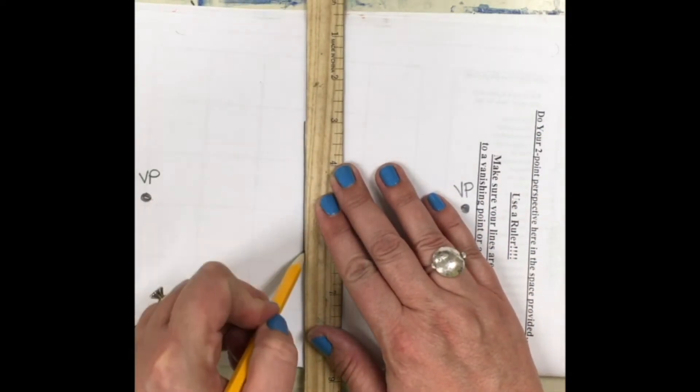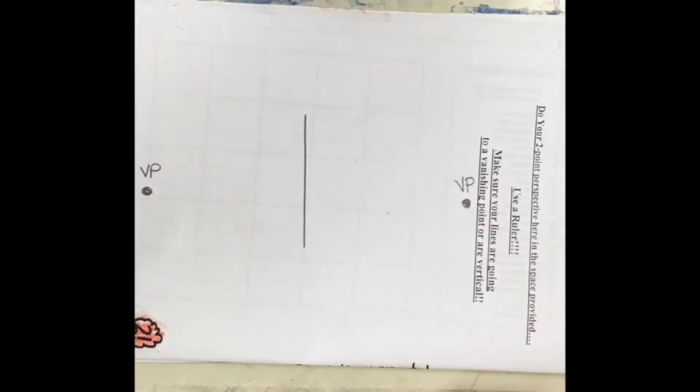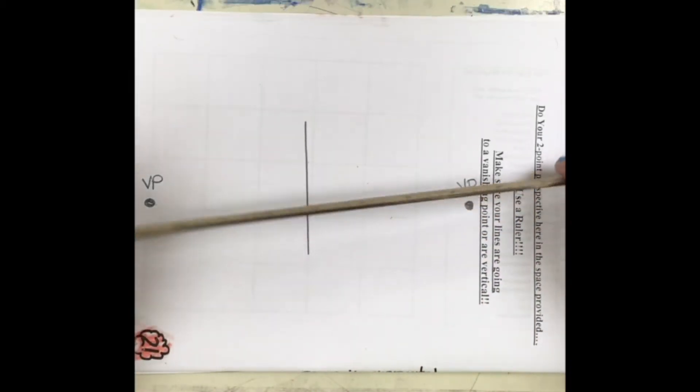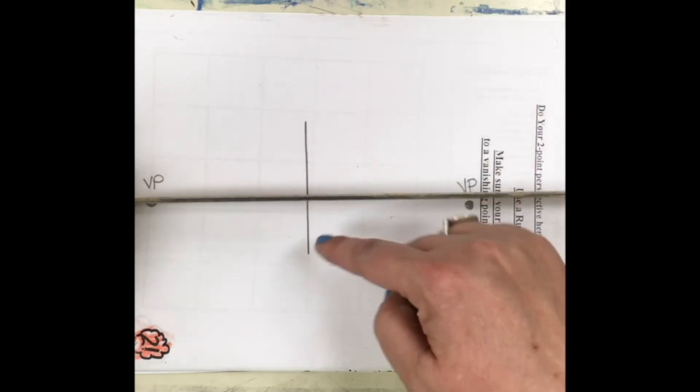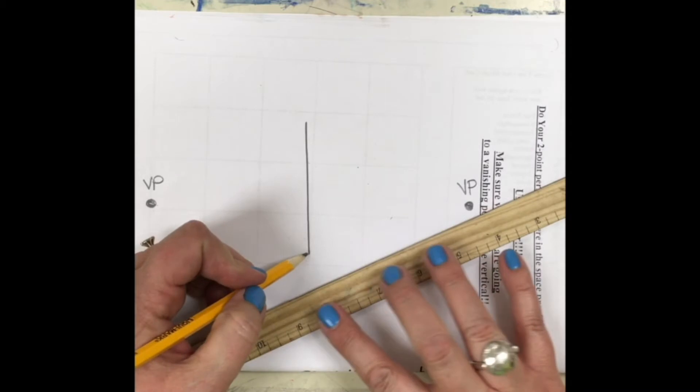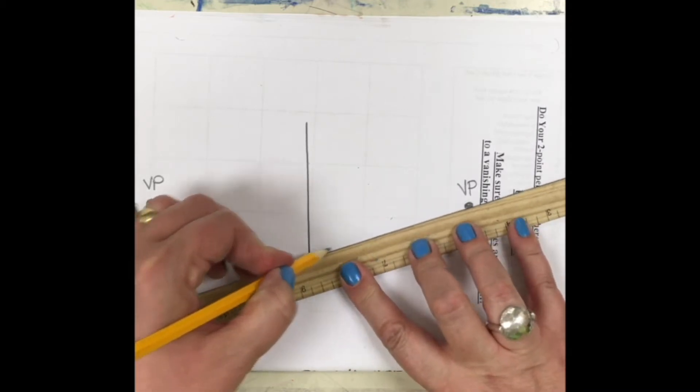Then we're gonna draw a vertical line in the middle of our drawing, and then from that vertical line we want our vanishing points to go above it and to go below it. Or that vertical line should go above and below the vanishing point.